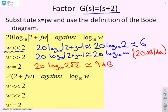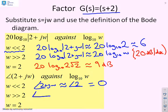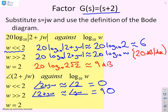For the phase of G(s) = s + 2: when ω ≪ 2, the argument of (2 + jω) ≈ argument of 2 = 0 degrees. When ω ≫ 2, the argument ≈ argument of jω = 90 degrees. At ω = 2, we get 2 + 2j, giving 45 degrees.